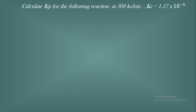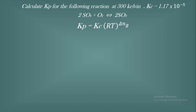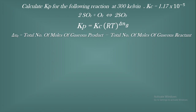For the third equation: calculate Kp for 2SO₂ + O₂ ⇌ 2SO₃ at 300 K with a given Kc value. Looking at the equation, the product side has 2 moles while the reactant side has 2+1=3 moles, so the product side has fewer moles. Therefore Kp should be less than Kc. First, find ΔnG = 2 − 3 = −1.